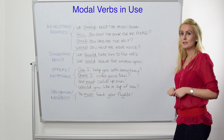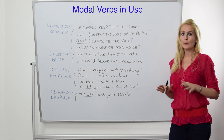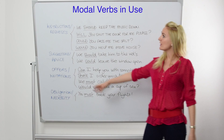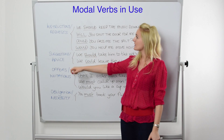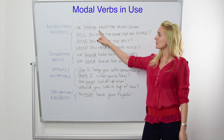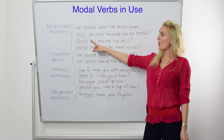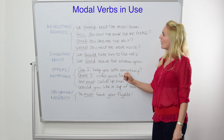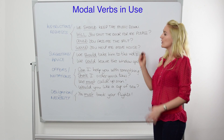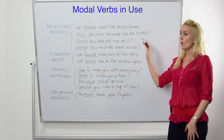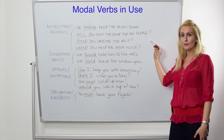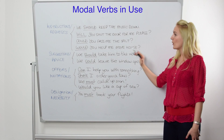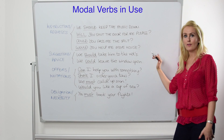Now for some more examples of modal verbs. If we wish to give instructions or make requests, we can use should, will, could, or would. For example: We should keep the music down. Will you shut the door for me, please? Could you pass me the salt? Would you help me move house?